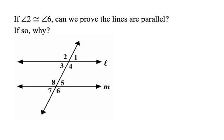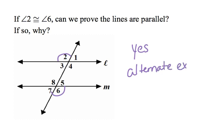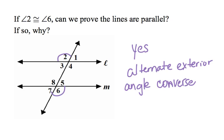Angles 2 and 6 are on two separate lines — angle 2 touches L and angle 6 touches M. They are congruent, so this is a yes. They are congruent because they are alternate exterior angles, so the reason is the alternate exterior angle converse. Each time I am proving parallel lines, I want to use these converse statements. It works only when doing proofs of parallel lines.